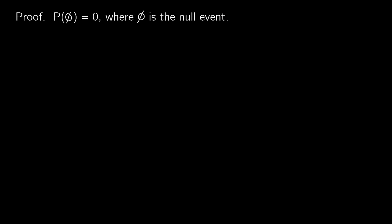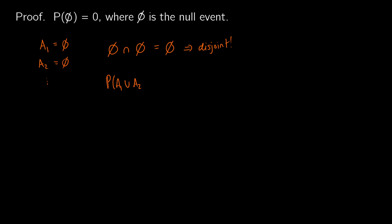To prove this, we use the third axiom. Imagine we have infinitely many events A1, A2, and so on, where nothing occurs. One thing we know about the empty set is that the intersection of the empty set with the empty set is the empty set itself, so these events are disjoint. By axiom three, the probability of A1 or A2 or dot dot dot is the sum of all their individual probabilities, and the only way this works out is if the probability of the empty set equals zero.